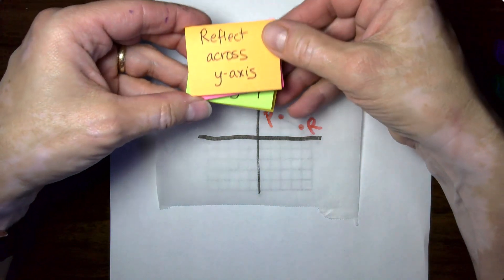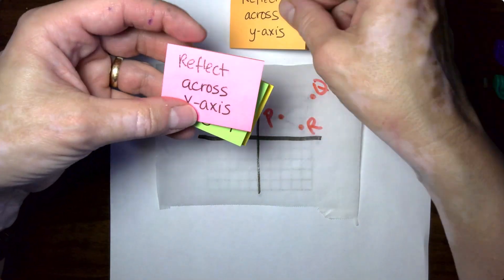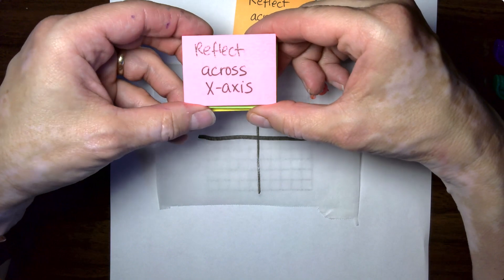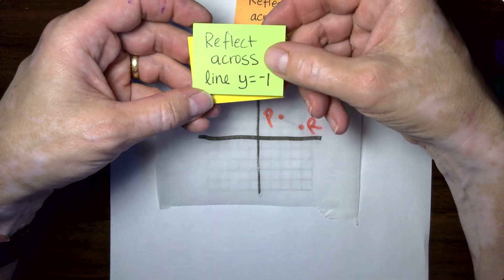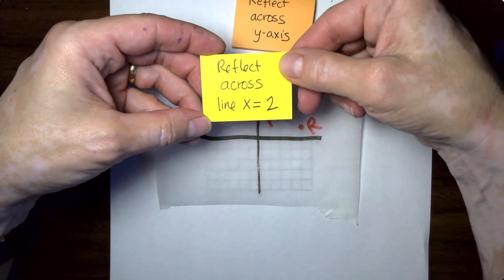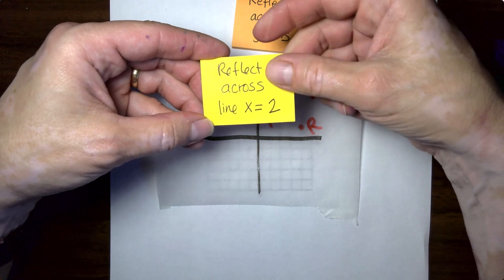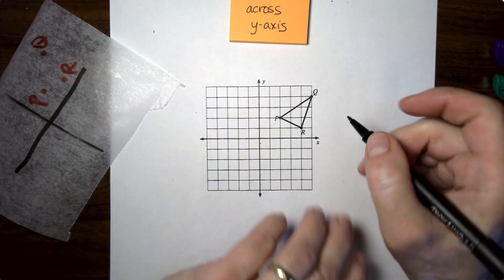Alright. So the first thing we're going to do, we're going to run through four real common questions that you'll see in geometry class. Usually reflect across the y-axis. We'll do that one first. Then we're going to reflect across the x-axis. Then we're going to reflect across the line y equals 1. And then we're going to reflect across the line y equals 2.